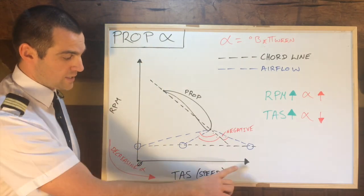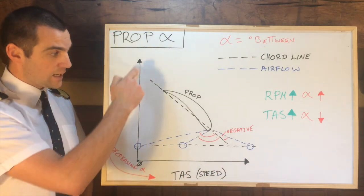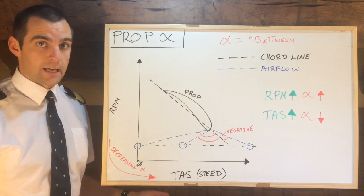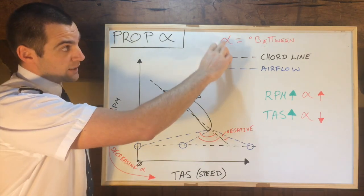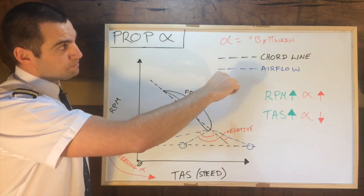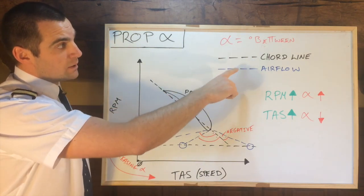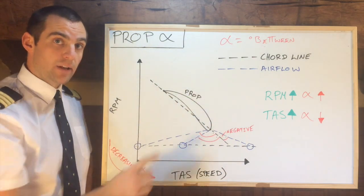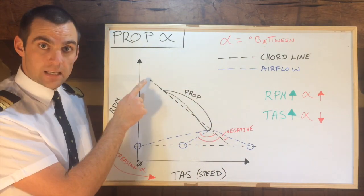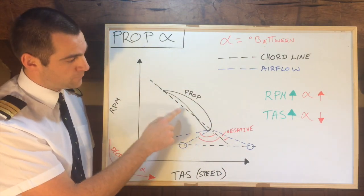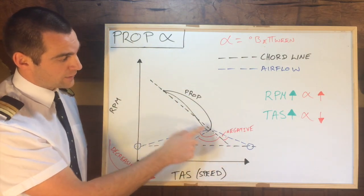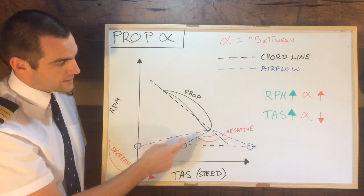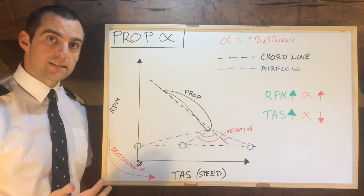So increasing TAS, increasing RPM. What is angle of attack? Represented by this symbol here, it is the angle between the chord line and the relative airflow. There's my chord line, represented with the black dotted line, and these lines here are my relative airflow.